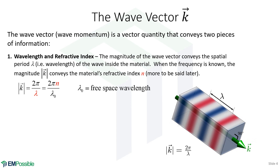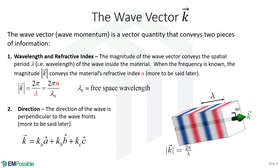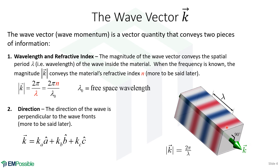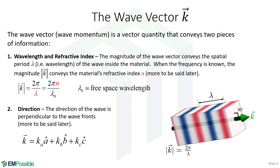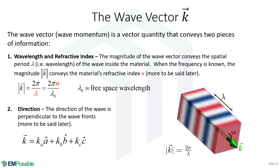The second piece of information is that the wave vector points in the direction the wave is propagating, as shown in the animation on the right. You can see the red and blue wave fronts moving along, and no matter what direction the wave is propagating, the wave vector is always perpendicular to those phase fronts. So that's our wave vector.